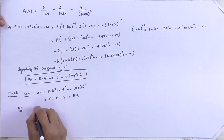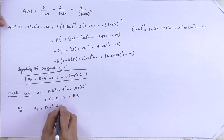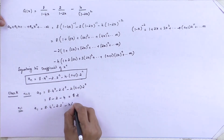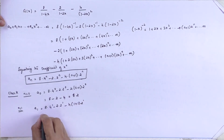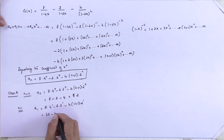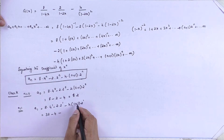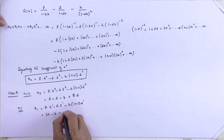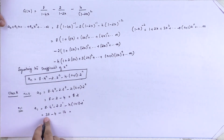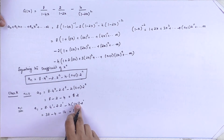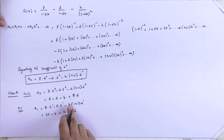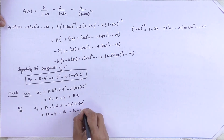Next, n is equal to 1. A_1 is equal to 8·4^1 minus 2·2^1 minus 4·(1+1)·2^1. So that is 32 minus 4 minus 4·2·2, which is 32 minus 4 minus 16, equal to 12. This is how we get the values of our recurrence relation a_n. Thank you.